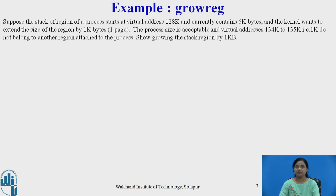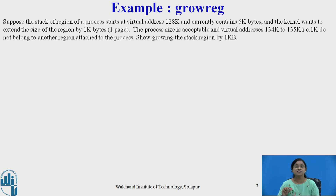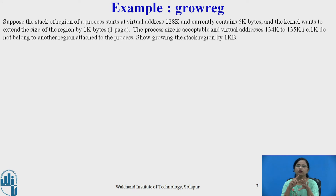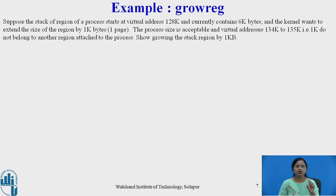Now we will see an example. Suppose we have a stack region of a process that starts at virtual address 128K and currently contains 6KB. The kernel wants to extend the size of the region by 1KB — so 6KB are already occupied and it wishes to add one more KB, meaning one more page is added into the page table. The process size is acceptable, and virtual address 134K is increased to 135K.